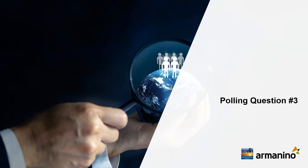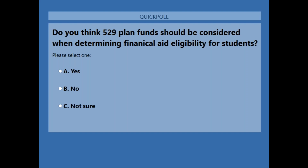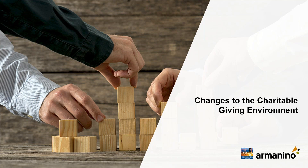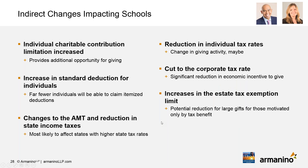Polling question three: should 529 plan funds be considered when determining financial aid eligibility? Results show the majority saying yes, with some saying no and some not sure. This is something schools will have to discuss and develop a policy for, since the law does not require them to do anything differently — it is a policy question for each school.